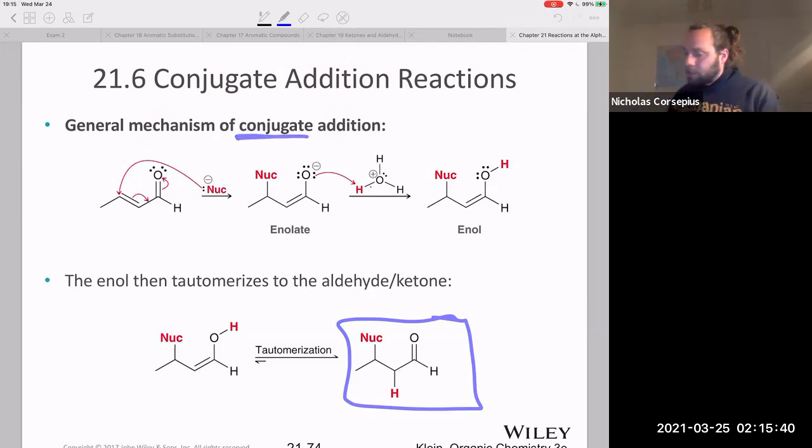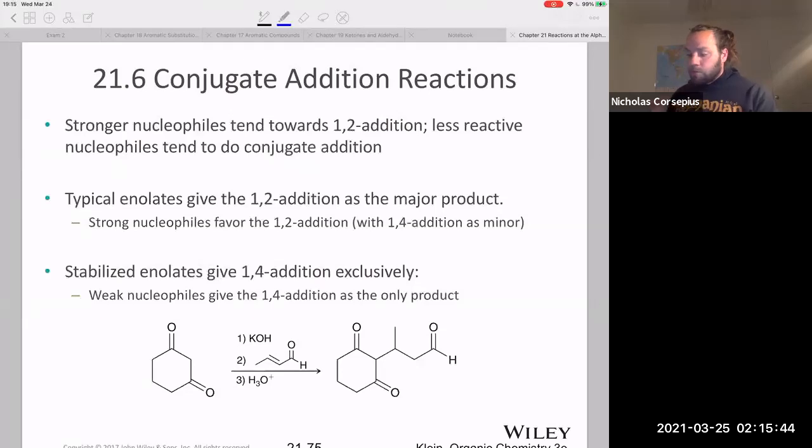Strong nucleophiles like the Grignards, as well as a typical enolate, will give you the 1-2 addition as the major product, and you can have some 1-4 as the minor product. A stabilized enolate, and by that I mean the enolate ion that forms on that 1,3-dioxo compound, where this carbon is right between those two carbonyl groups - these are weaker nucleophiles, and they will prefer the 1-4 addition or the conjugate addition. If I were to take this stabilized enolate here and react it with this particular enone, I would get addition at this carbon here.